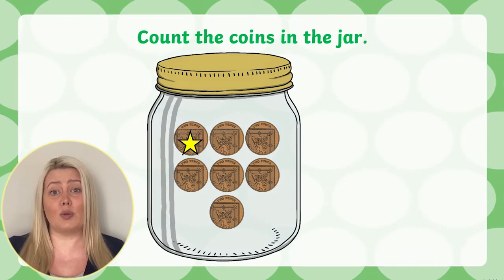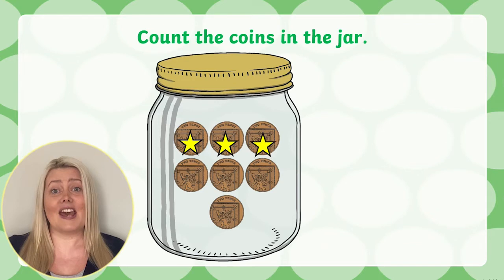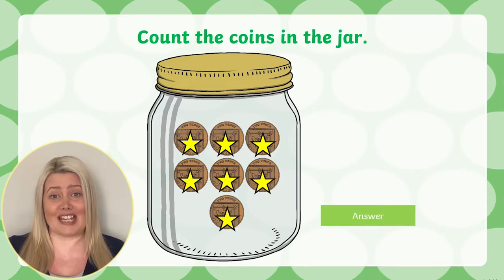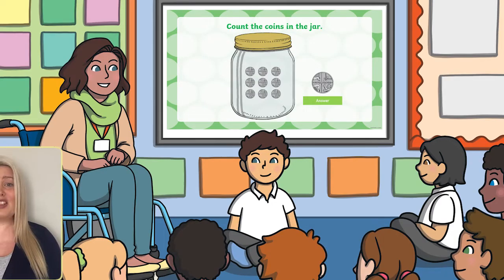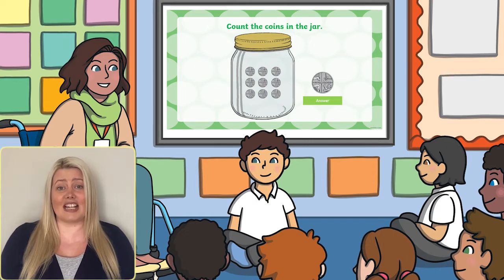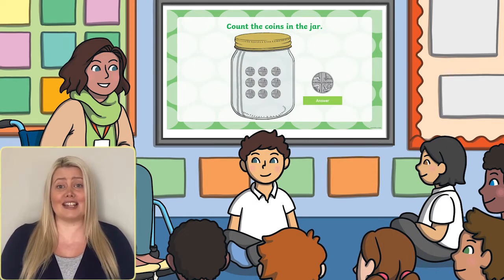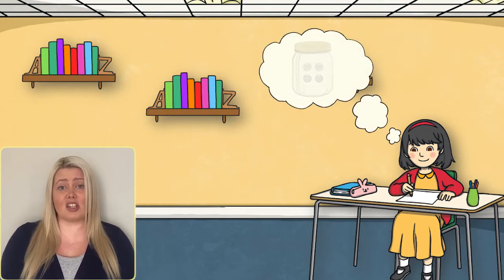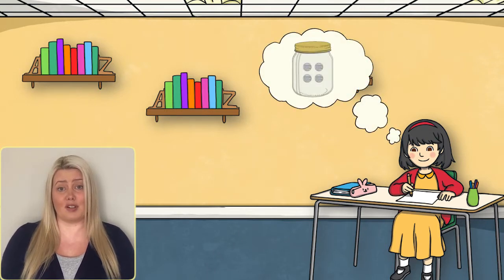For example, skip counting in twos: 2, 4, 6, 8, 10, 12, 14. This is a great group activity and a good way to get children counting in twos, fives or tens aloud. Or children could write their answers on a piece of paper or a whiteboard.